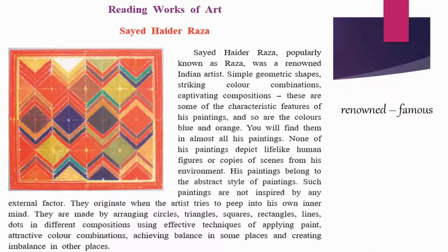The first part of the lesson is about Syed Haider Raza, popularly known as Raza, a renowned Indian artist. Simple geometric shapes, striking color combinations, and captivating compositions are some of the characteristic features of his paintings. The colors blue and orange appear in almost all his paintings. None of his paintings depict lifelike human figures or copies of scenes from his environment.